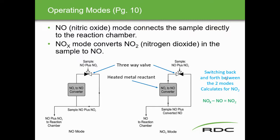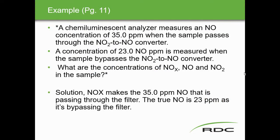As an example: if the NOx reading is 35 ppm (sample through converter) and the NO reading is 23 ppm (sample bypassing converter), then NO2 = NOx − NO = 35 − 23 = 12 ppm. The calculation is a simple mathematical subtraction, and the formula is provided on page 11 of the course notes.